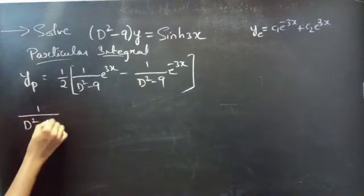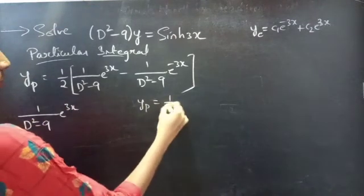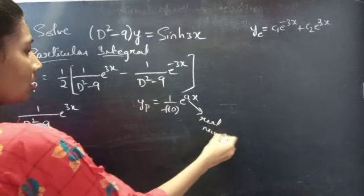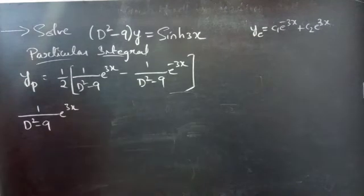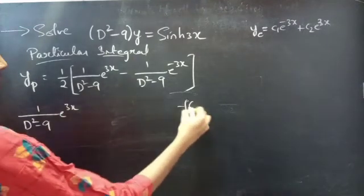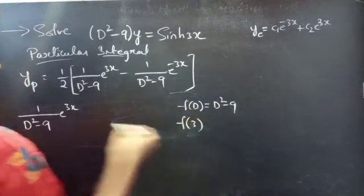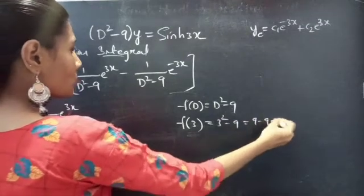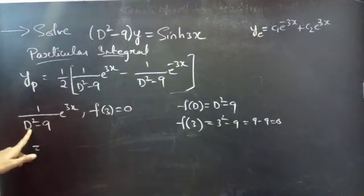Consider the first term (1/(D² - 9))·e^(3x), of the form (1/f(D))·e^(ax) where a = 3. We find f(3) = 3² - 9 = 9 - 9 = 0. Since f(3) = 0, we cannot replace D by 3 directly. So we use the rule: x·(1/f'(D))·e^(ax).